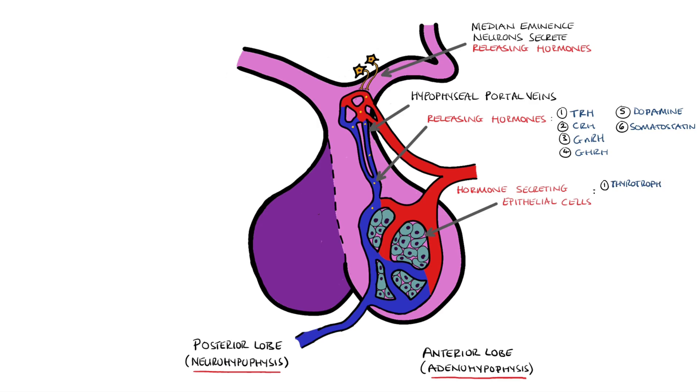These epithelial cells are divided into thyrotrophs, gonadotrophs, corticotrophs, somatotrophs and lactotrophs.